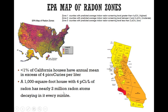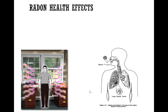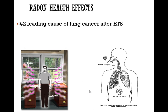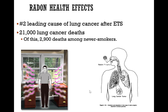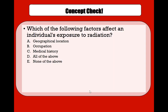A 1,000 square foot house with 4 picocuries per liter of radon has nearly 2 million radon atoms decaying in it every minute. The health effects from radon are similar to the alpha and beta health effects mentioned earlier — it poses significant internal damage via alpha particles. Because radon is a gas, it quickly enters our lungs and is the number two leading cause of lung cancer after environmental tobacco smoke. Almost 21,000 lung cancer deaths have been reported from radon every year in the US.